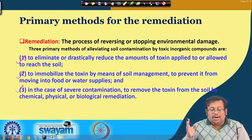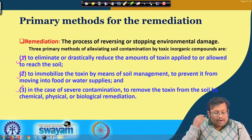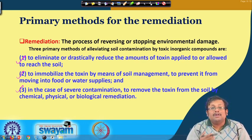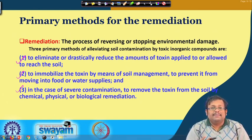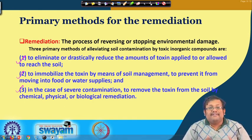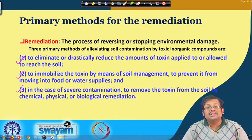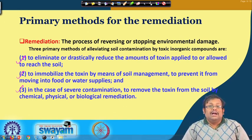Basically there are three steps. First, reduce or drastically cut down the amount of toxin which we generally apply or allow to reach the soil — this is a preventive method. Second, once it reaches the soil, try to immobilize the toxin by means of soil management — this is a management aspect. Finally, in case of severe contamination, remove the toxin from the soil by different types of chemical, physical, and biological remediation — this is a corrective measure.